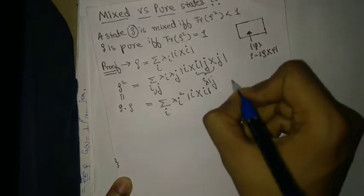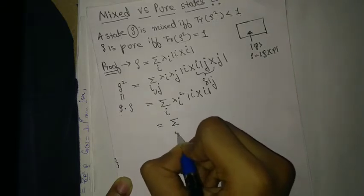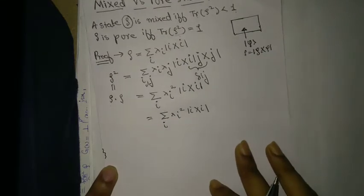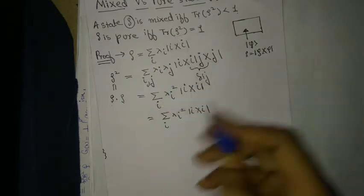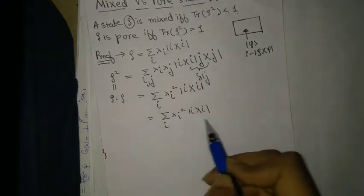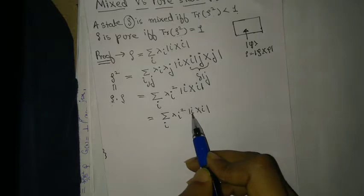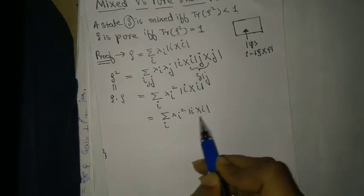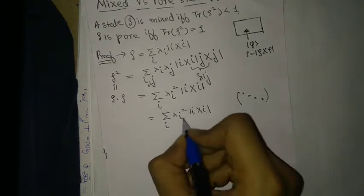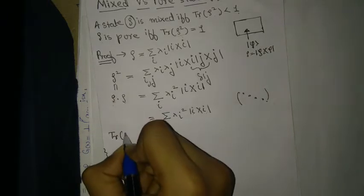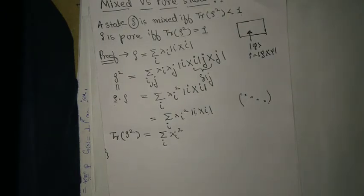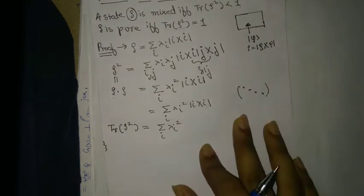After applying the delta, the final result is ρ² = Σᵢ λᵢ² |i⟩⟨i|. This is like a diagonal matrix where the squares of the λᵢ are the diagonal elements. So the trace of ρ² is simply the summation over i of λᵢ². That's clear from reading off the diagonal entries.